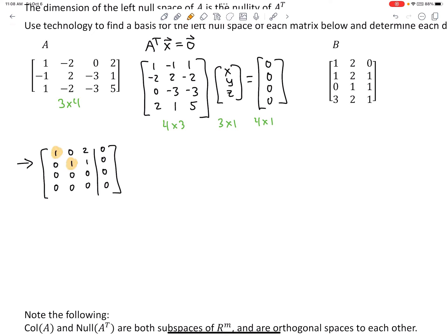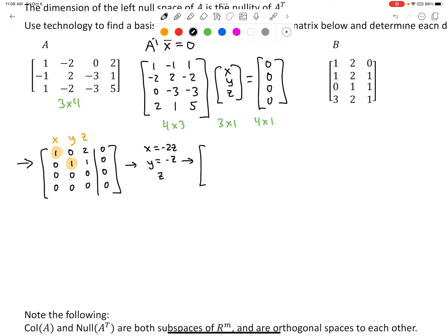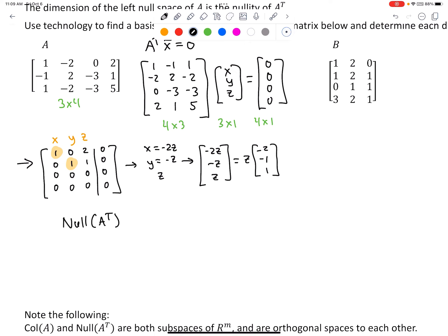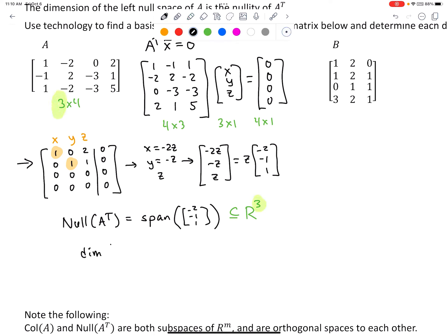Putting the augmented matrix in RREF gives two pivot positions. With x, y, z as variables, z is free and x, y are basic. Reading off: x plus 2z equals zero, so x equals negative 2z; y plus z equals zero, so y equals negative z; z is free. The solution is z times (negative 2, negative 1, 1). Factoring out z reveals one basis vector. The null space of A^T — the left null space of A — equals the span of this one vector. This is a subspace of R^3, corresponding to the number of rows of A. The dimension is 1, since there was one free variable.